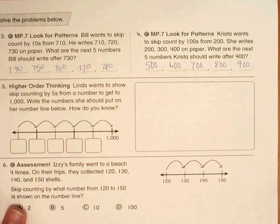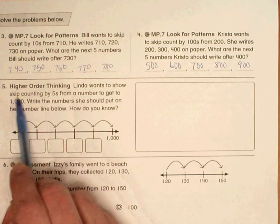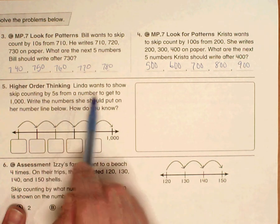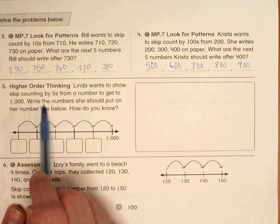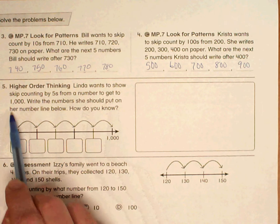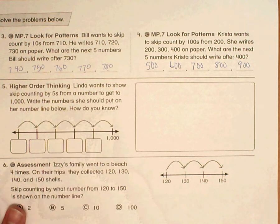Number 5 on homework 9-7. Linda wants to show skip counting by 5's from a number to get to 1,000. Write the numbers she should put on her number line below. How do you know?